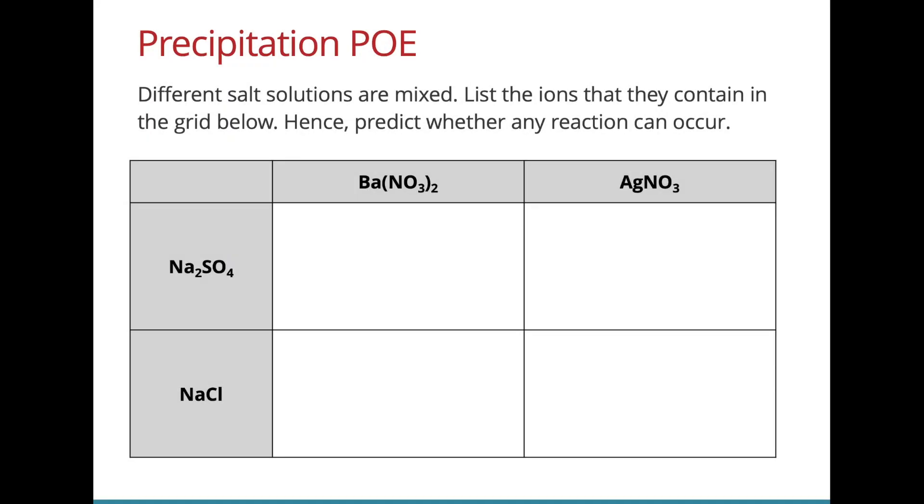In order to decide whether or not a reaction will occur, we can list down the ions that are present in each solution. So here they are. In the first one with this combination of ions, barium ions can react with sulfate ions to form a precipitate of barium sulfate. So what do we observe? We observe a white precipitate and the reason is because barium sulfate is formed and barium sulfate is insoluble.